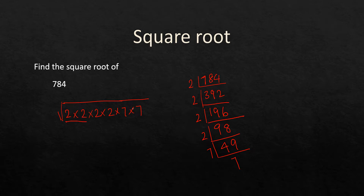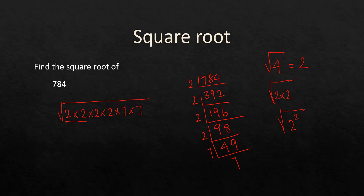For every two of the same numbers we can take one of them outside the square root. We know that the square root of 4 is 2, because 4 = 2 × 2, or 2 squared. So the square root of 2 squared is 2.